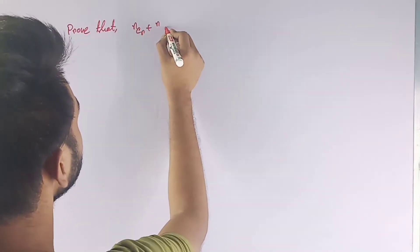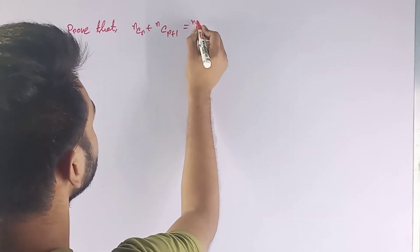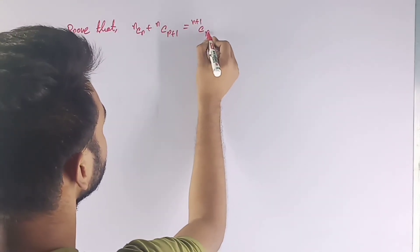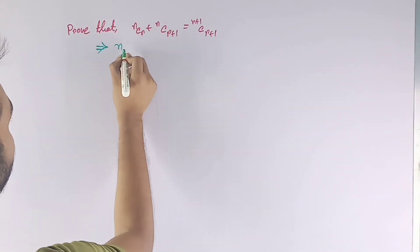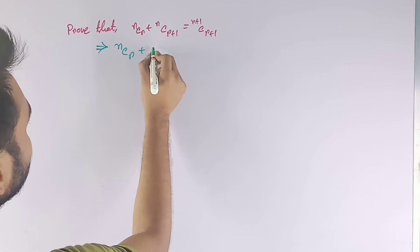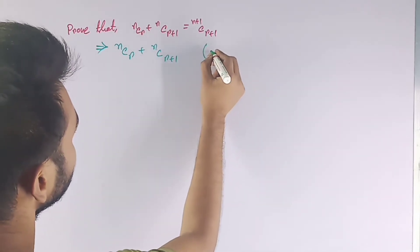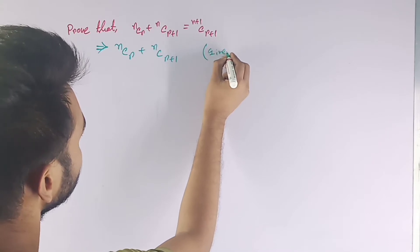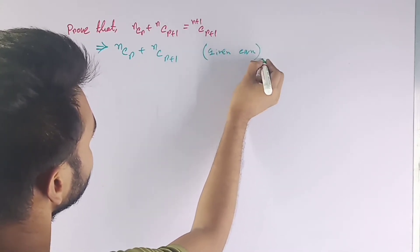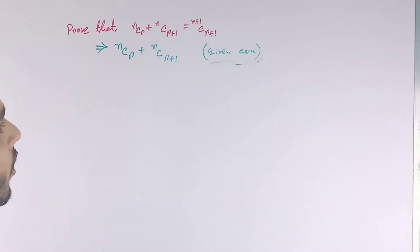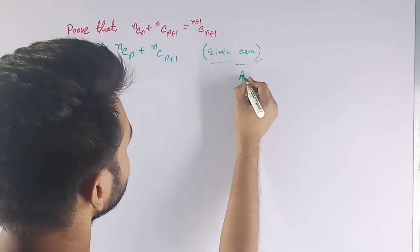...nCr + nC(r+1) = (n+1)C(r+1). That's it. Now we can write the given equation, or we can write the left-hand side, that is nCr + nC(r+1). I also write the given equation here. The left-hand side, that means LHS.